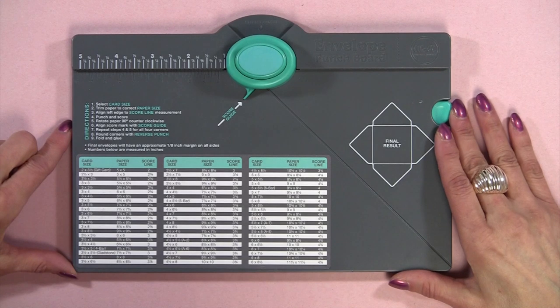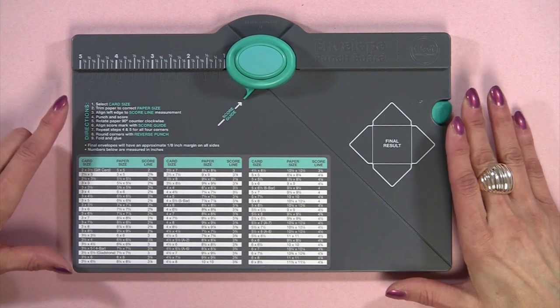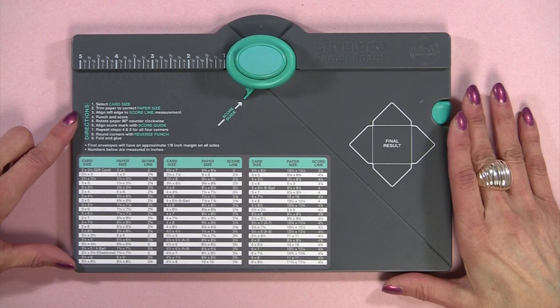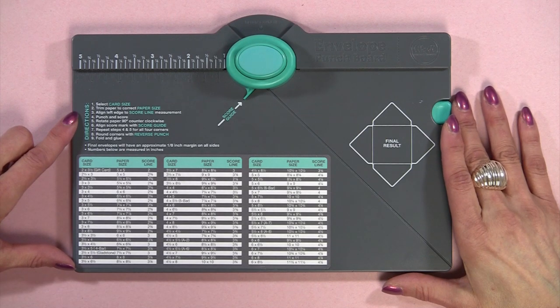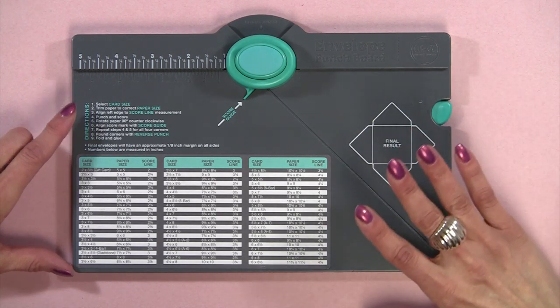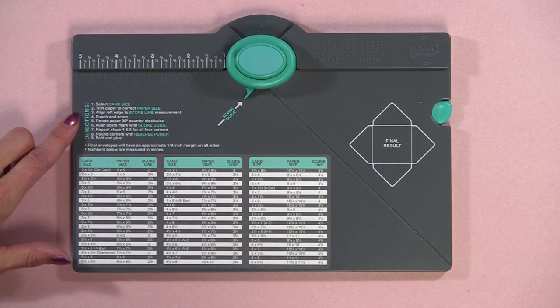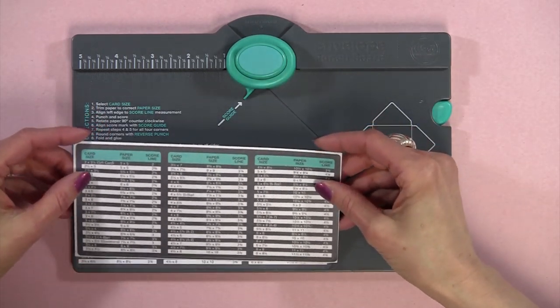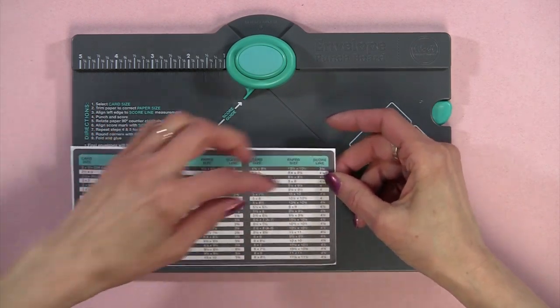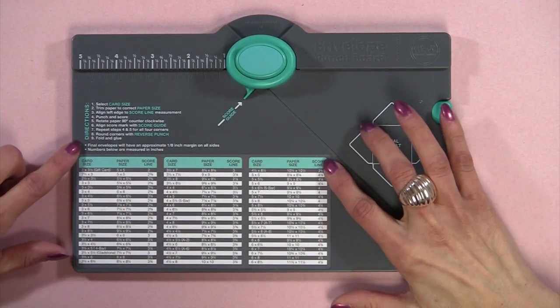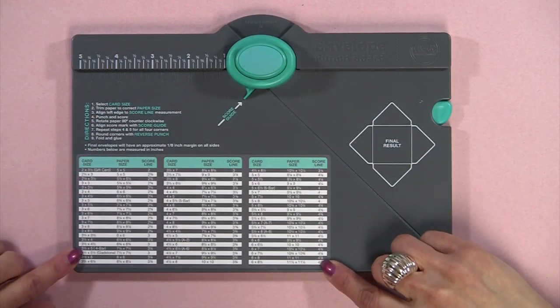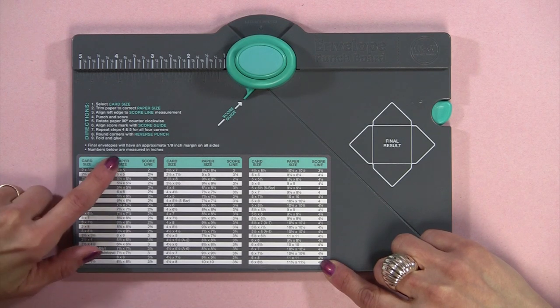If you purchase the original punch board, there were several errors on various sizes. I think there were over 8 errors. We Are Memory Keepers fixed the errors and they included with this one a sheet or a new sticker that you just peel off and put on. And I already went ahead. So this is the correct sizes.